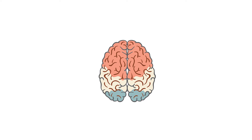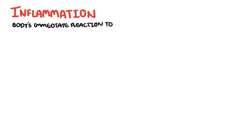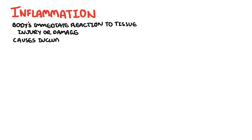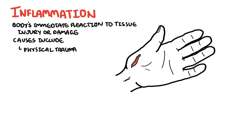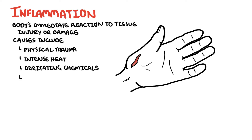In this video we're going to talk about inflammation and inflammatory mediators. Inflammation is the body's immediate reaction to tissue injury or damage. This damage can be caused by physical trauma, intense heat, irritating chemicals and infections by viruses, fungi or bacteria.